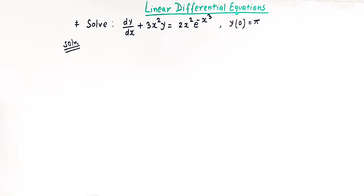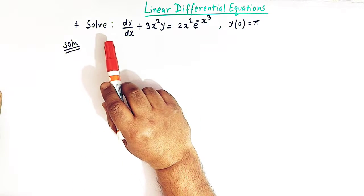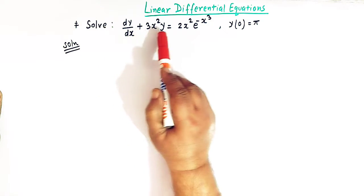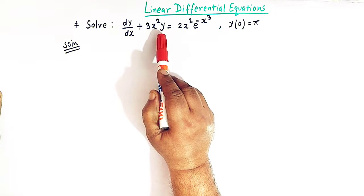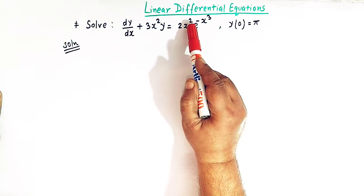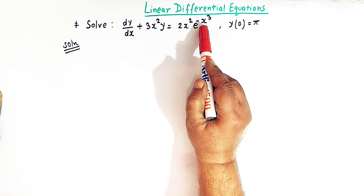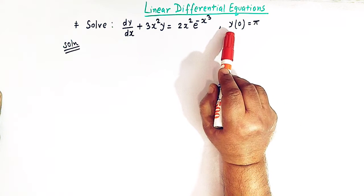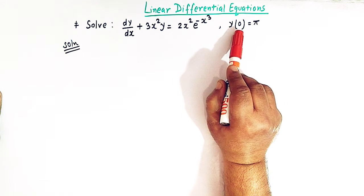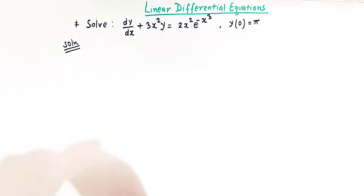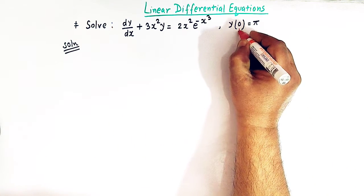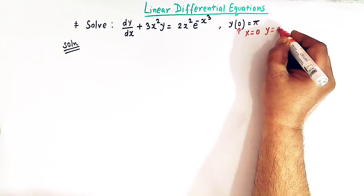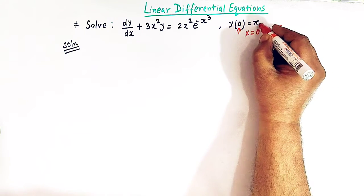We are going to solve the linear differential equation dy/dx + 3x² y = 2x² e^(−x³), with boundary conditions y(0) = π, which means when x = 0, y = π.